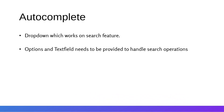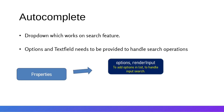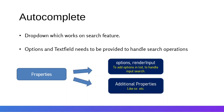The Autocomplete has options and a text field which need to be provided to handle the search operation. The options are just an array of list items that we search with autocompletion. We also need to provide the text field, and it automatically handles the state and the search operation. The two key properties are options — where we provide an array — and render input, where we provide the TextField component that handles search automatically.